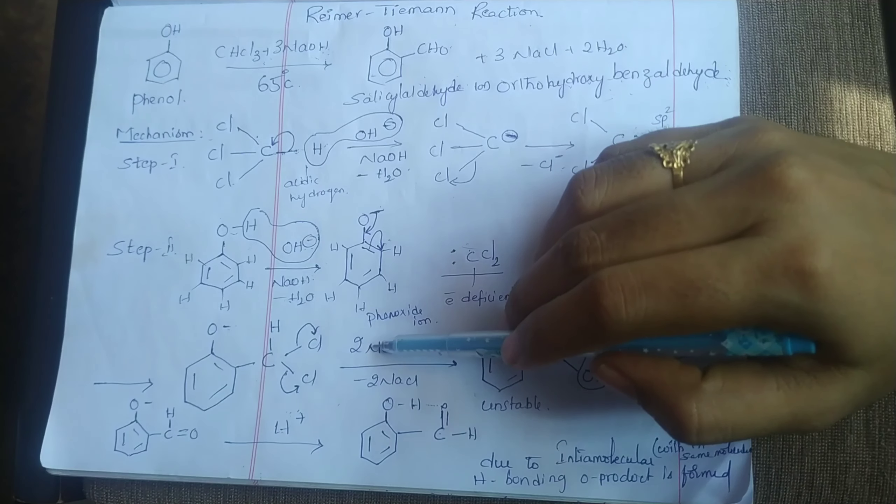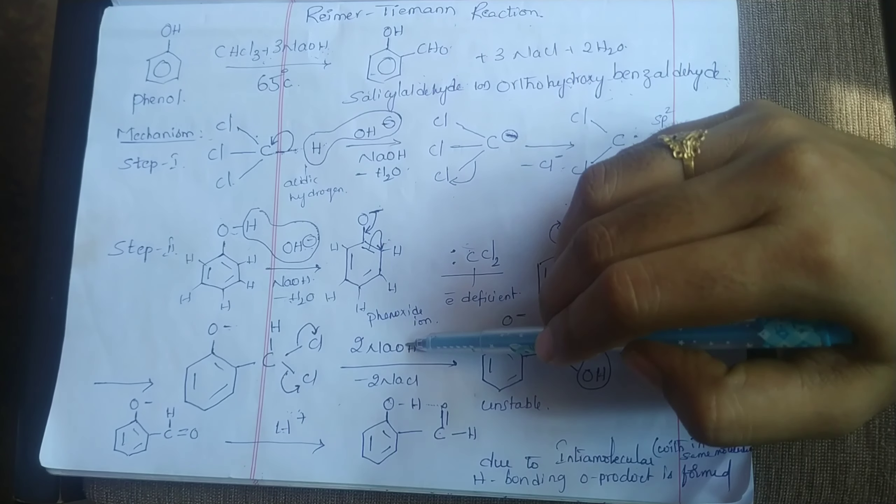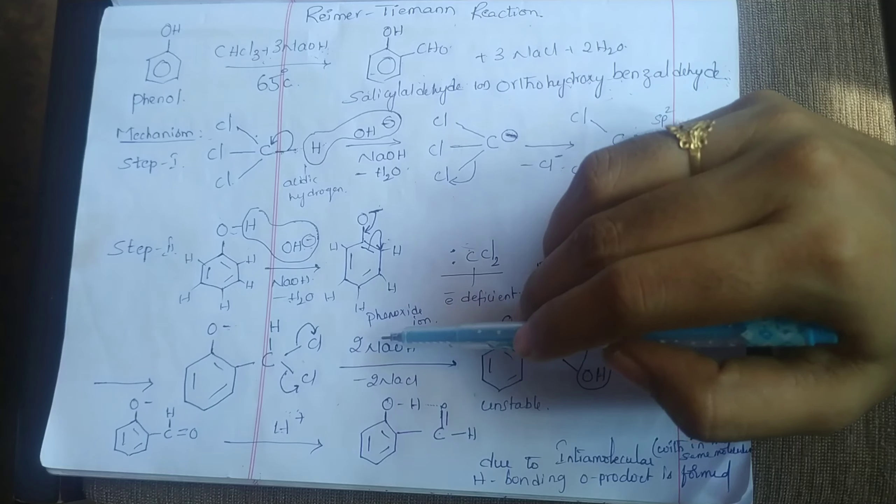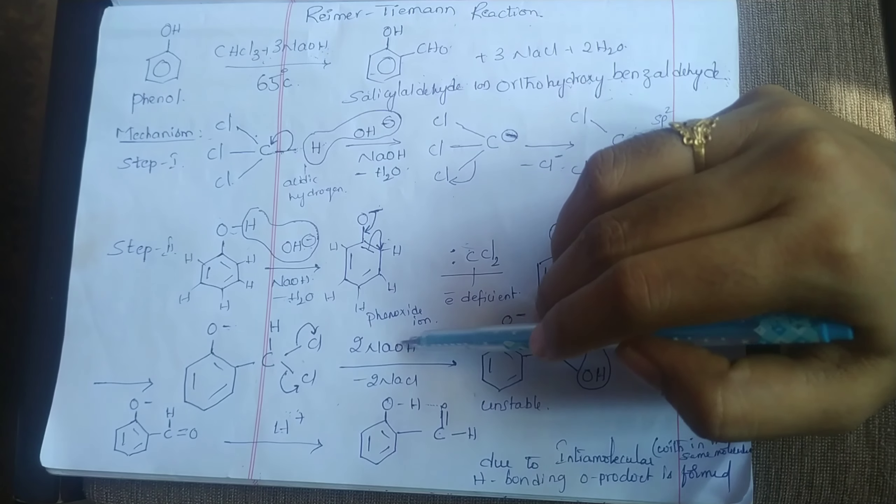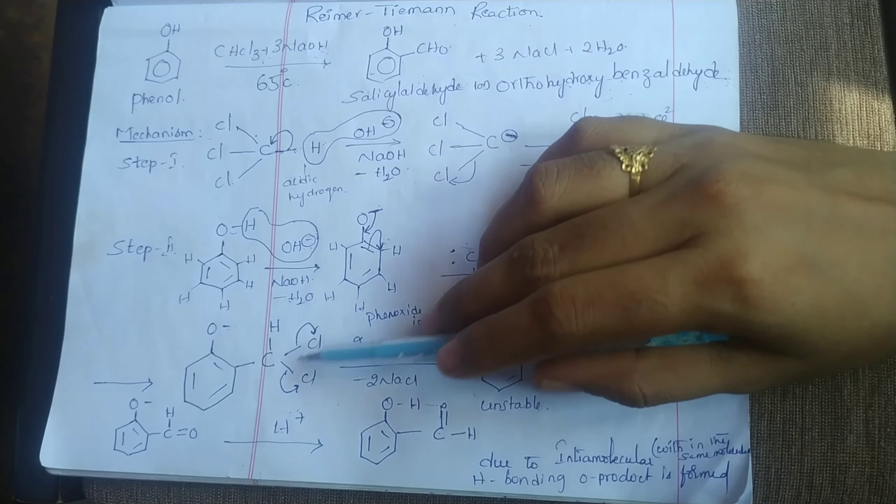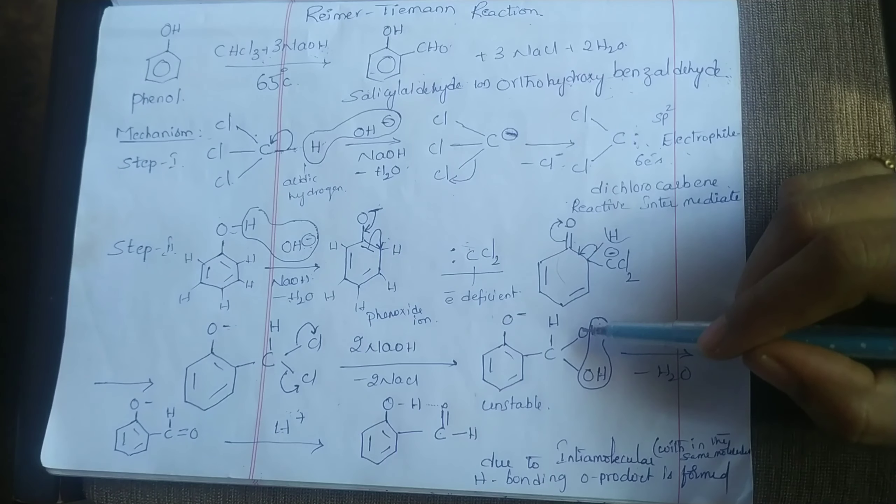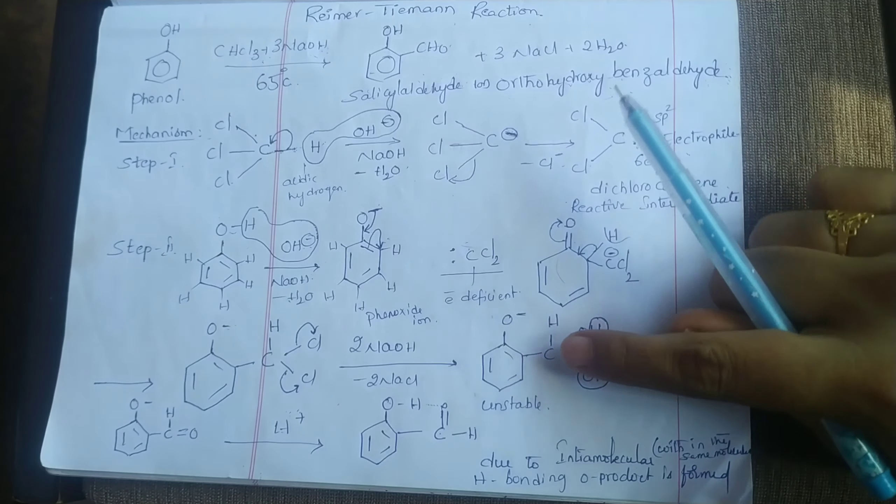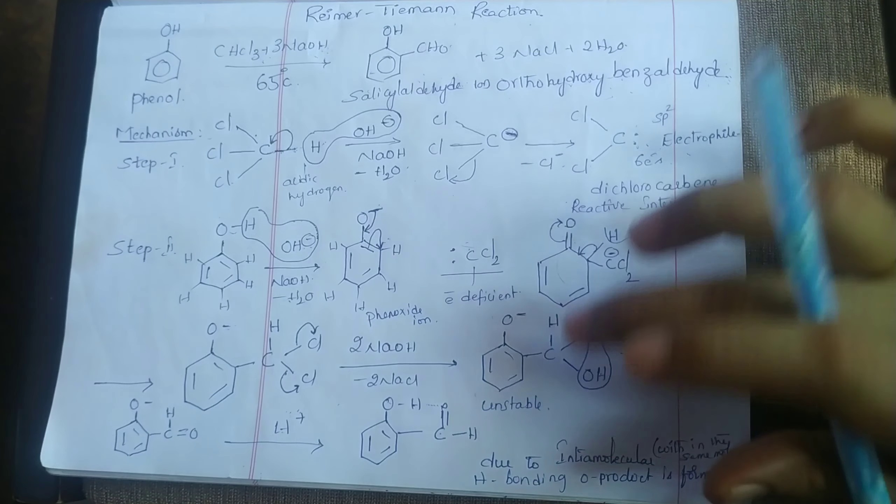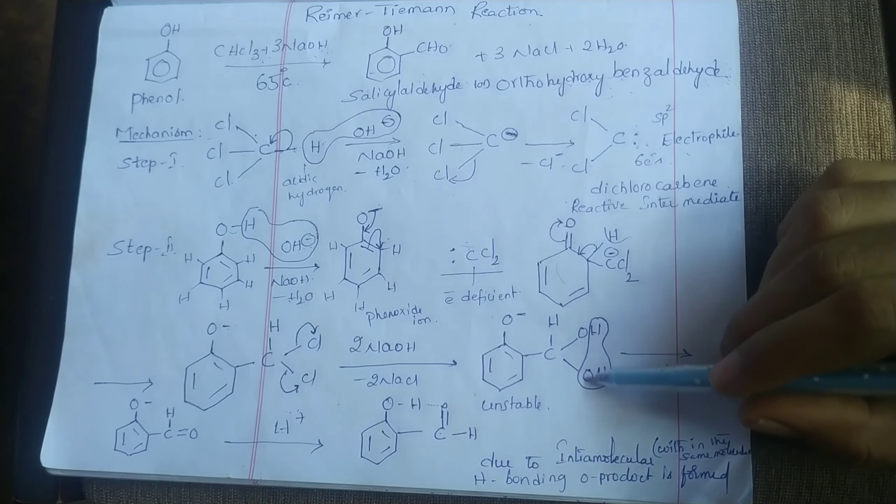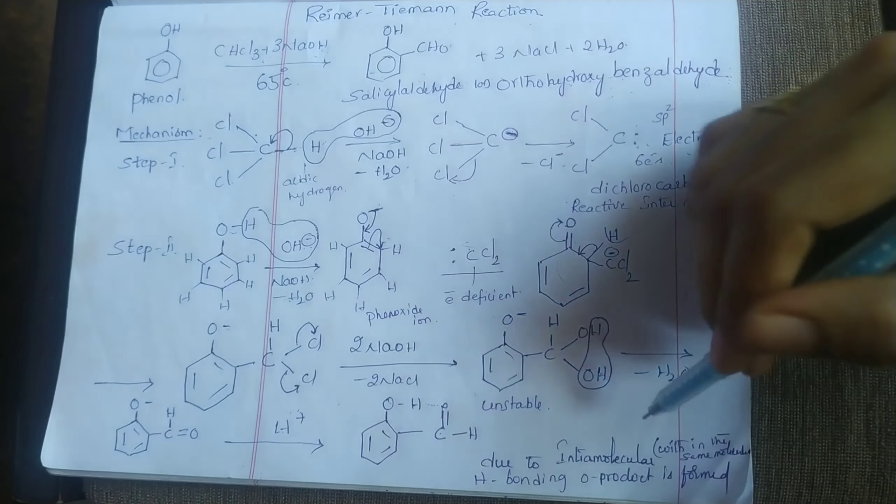So two hydroxyl groups are attached to this carbon atom. But two hydroxyl groups present on one carbon atom is unstable, so water is removed. So finally, aldehyde group is formed.